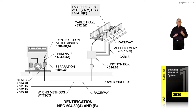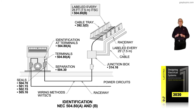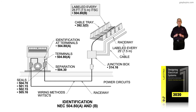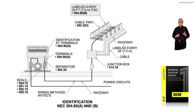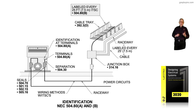The separation rule is in 504.30. You have the identification of the light blue coloring or labeling in 504.88. The seals required based upon certain conditions of installation are in 504.70 for intrinsically safe. For power circuits, it's 501.15 for gas and vapor, and 502.15 for dust,